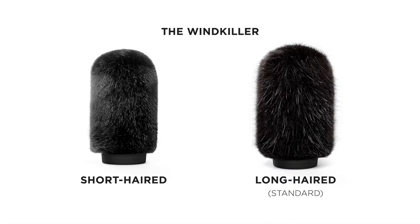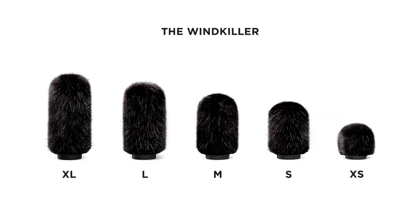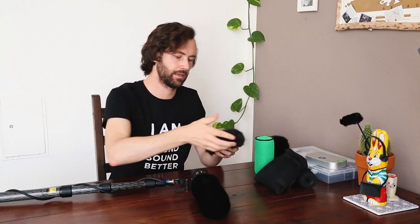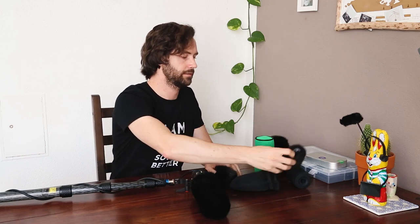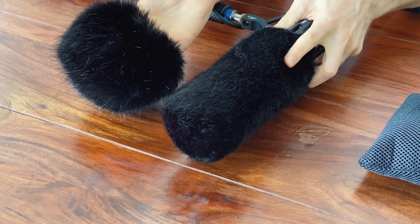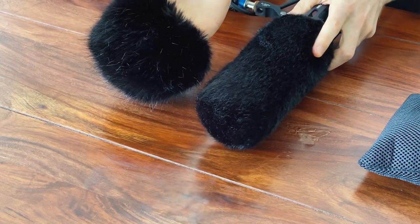The wind killer comes in two different styles and five different sizes, and we also have two different base sizes — so different entry holes on the back. We have a short fur version and a long fur version. The long fur is the standard one — so when you buy a wind killer, you get the long fur wind killer. The short fur has a shorter pile length bonded to it.